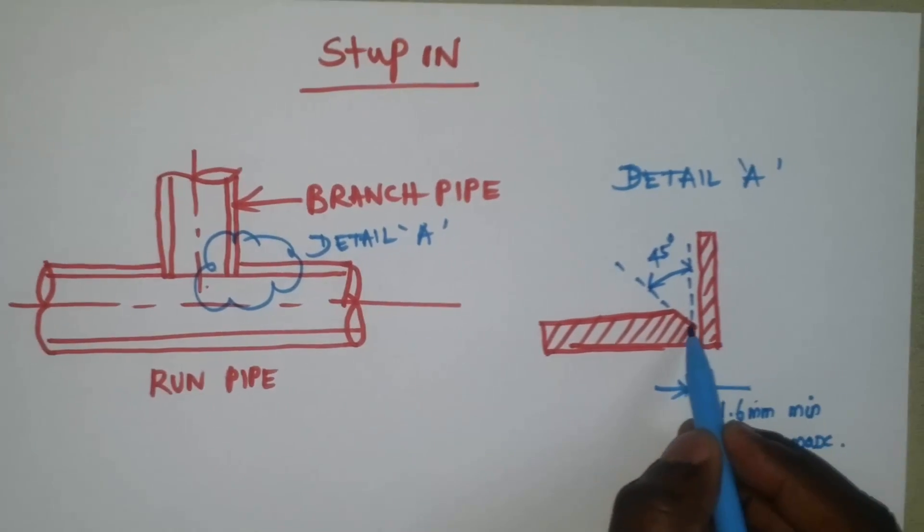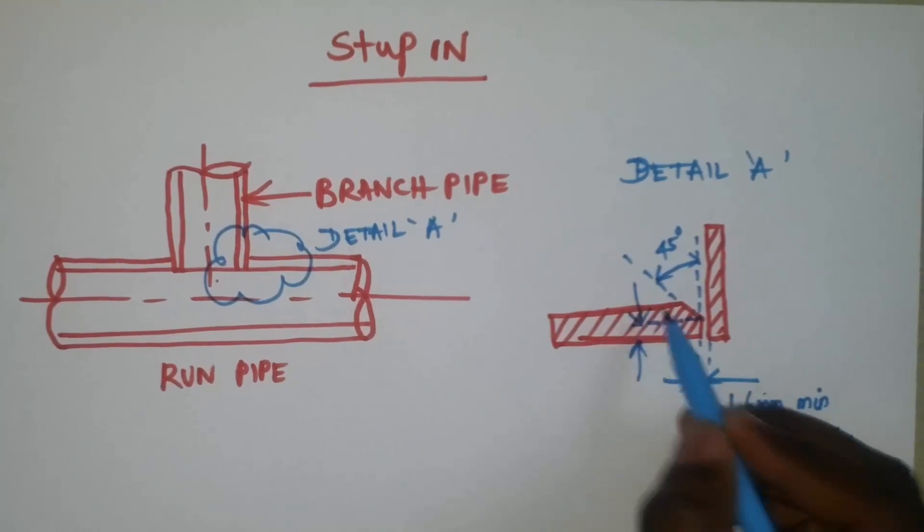Stub in is used when the branch is more than one size smaller than the main pipe.